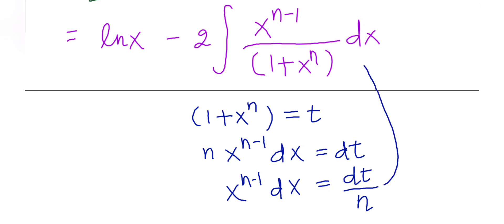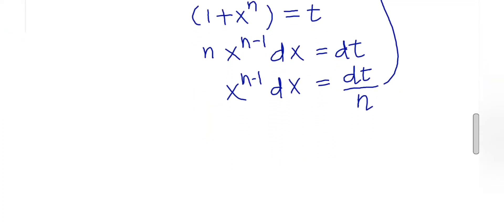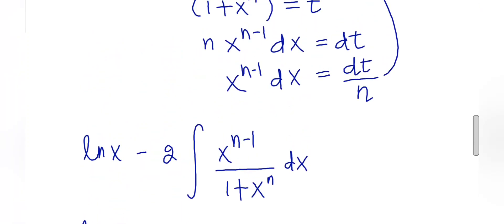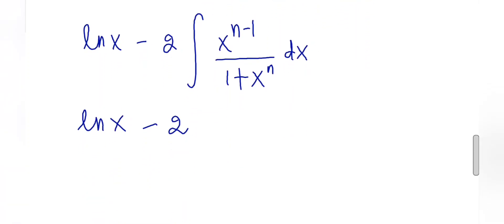Using this substitution, I have ln(x) - 2 ∫ x^(n-1) / (1 + x^n) dx. This becomes ln(x) - 2 ∫ (dt/n) / t.